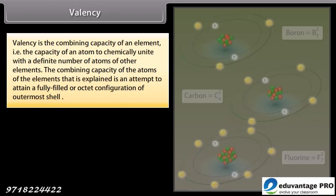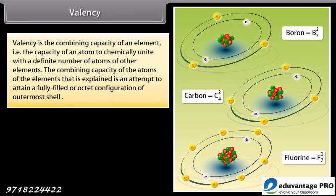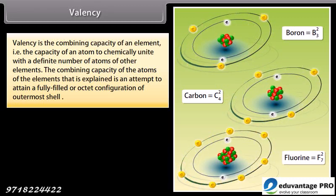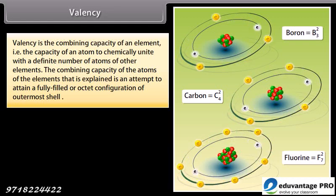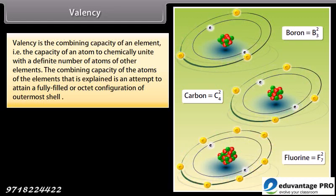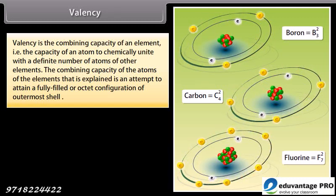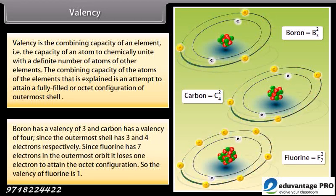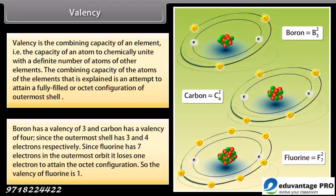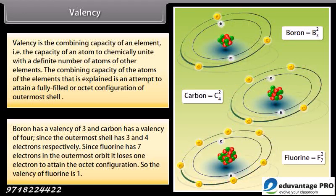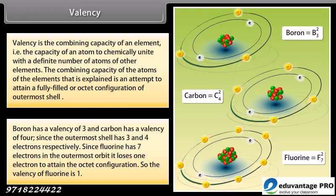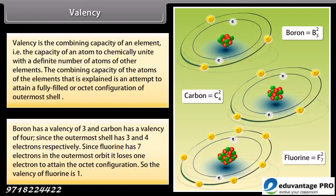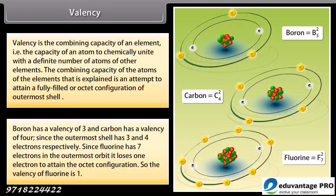Valency. Valency is the combining capacity of an element, that is, the capacity of an atom to chemically unite with the definite number of atoms of other elements. The combining capacity of the atoms of the elements is explained in an attempt to attain a fully filled or octet configuration of outermost shell. Boron has a valency of 3, and carbon has a valency of 4, since the outermost shell has 3 and 4 electrons respectively. Since fluorine has 7 electrons in the outermost orbit, it loses 1 electron to attain the octet configuration. So, the valency of fluorine is 1.